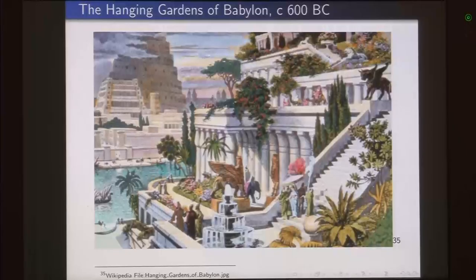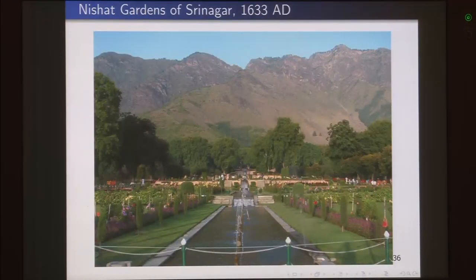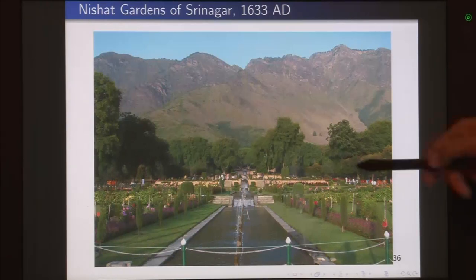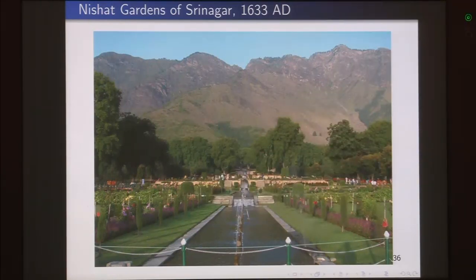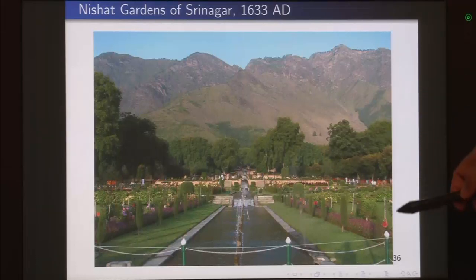The history of gardens is very old. The hanging gardens of Babylon around 600 BC were one of the old seven wonders of the world. In India also, we have had a very long tradition of having gardens. For instance, this is the Nishad garden of Srinagar, created in 1633 AD. But if you look around, the plant diversity in such gardens is not very huge — mostly ornamental plants or grasses — and they do not have a very high scientific bent.